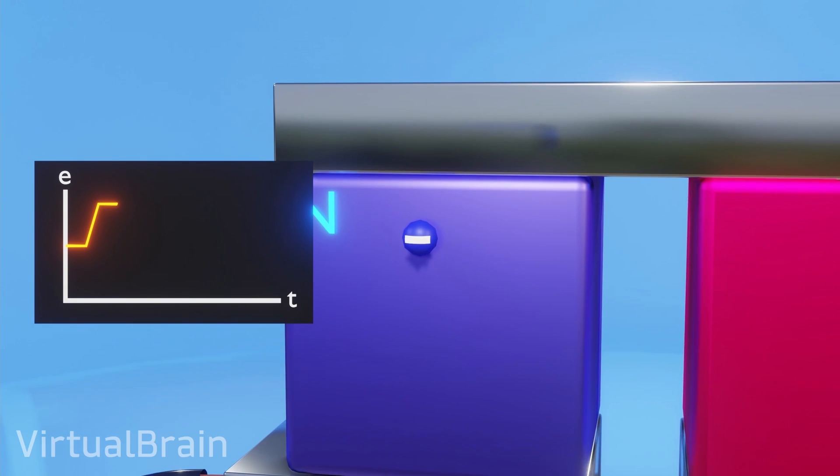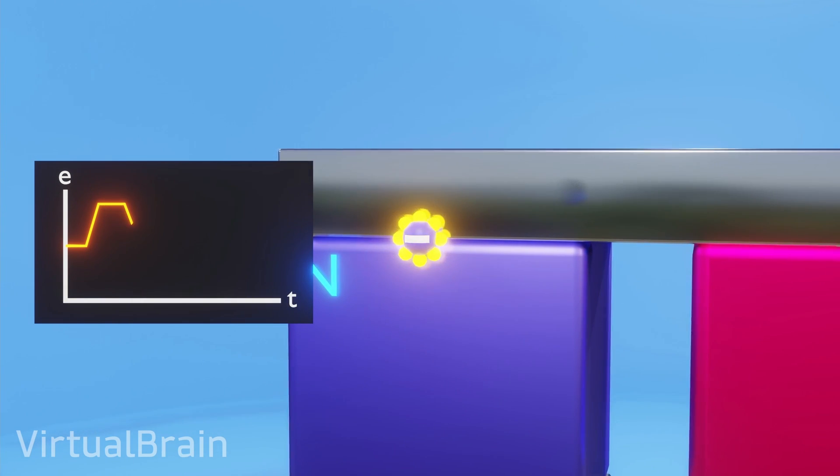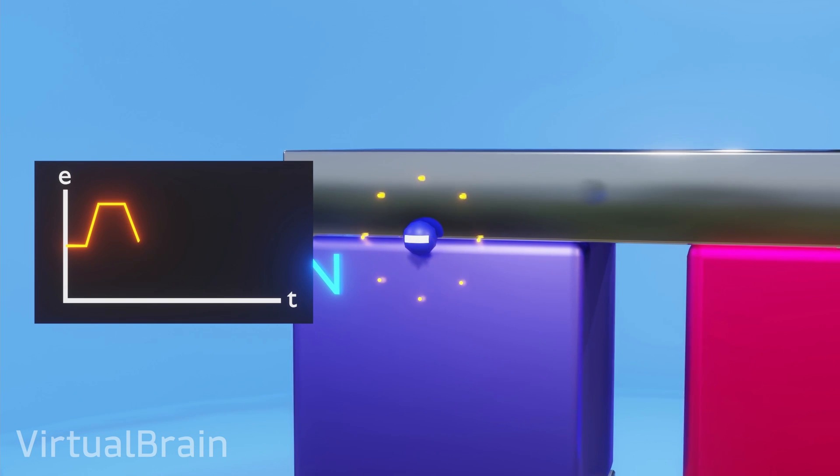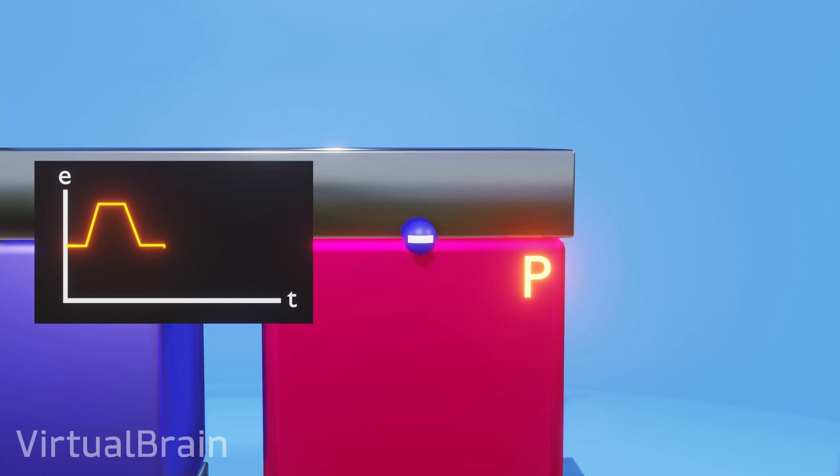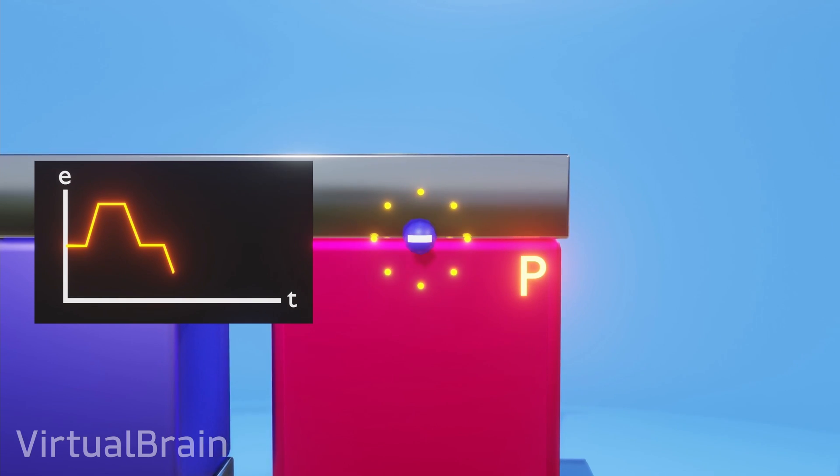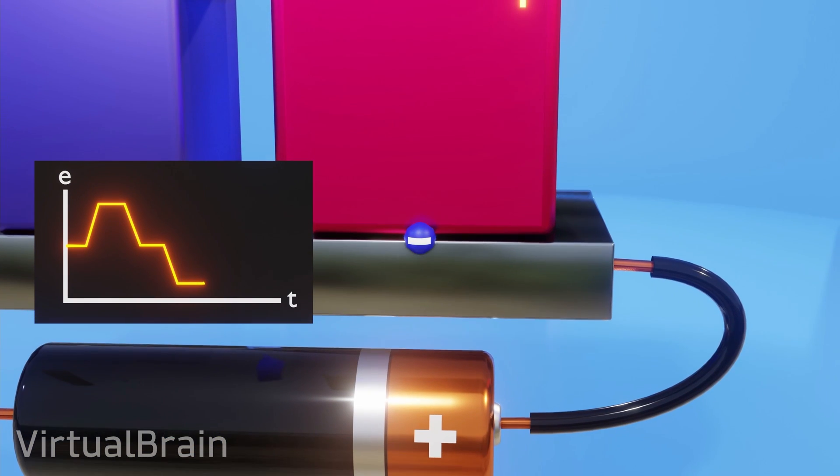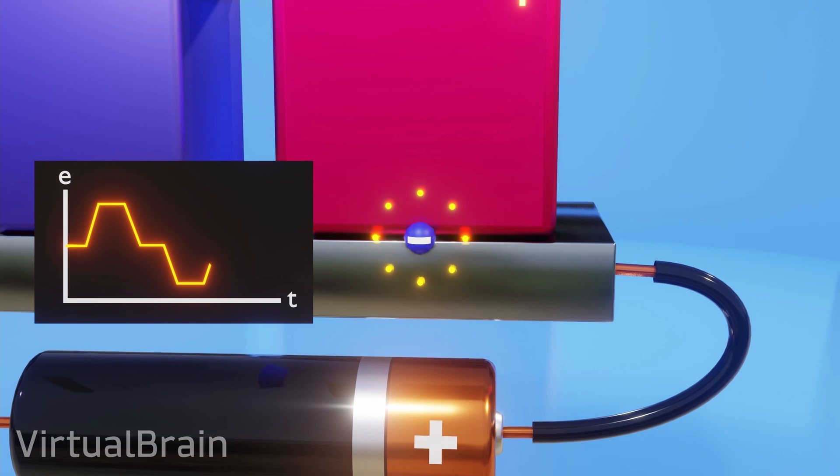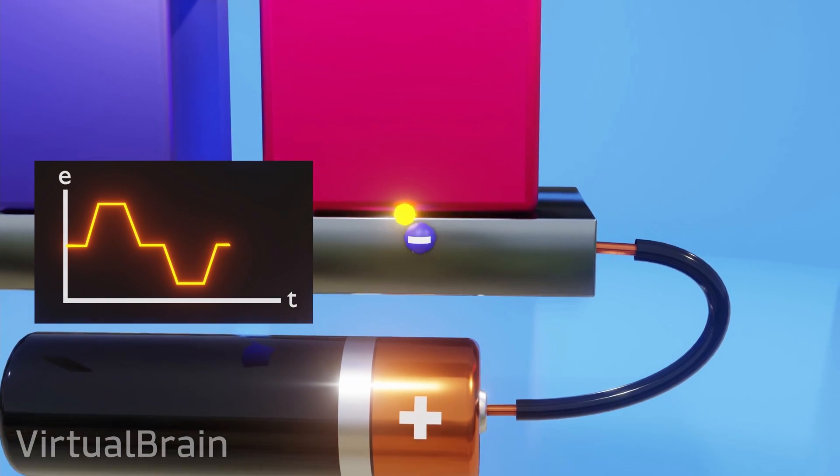Later, when it reaches the second junction, the opposite will occur. The electron will pass to a state of lower energy in the metal and to compensate it will increase the temperature. Then, when passing from the metal to the P-type semiconductor, since it has a lack of electrons, our electron will need less energy to pass through it. That is, again, heat will be generated as a result. And finally at the last junction, the electron will pass to a more energetic state when entering the metal, decreasing its temperature to compensate for the change.